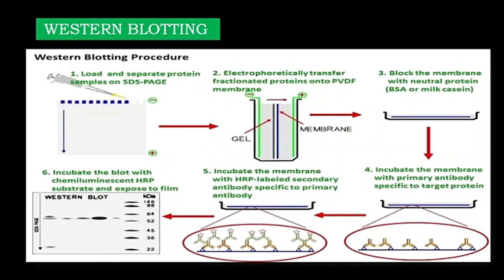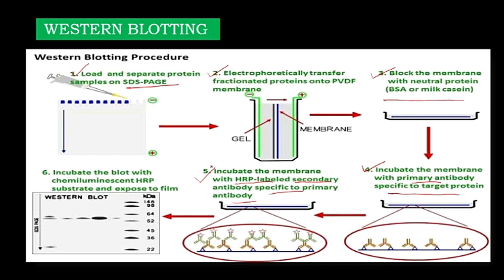Now let's move on to Western blotting. As you can see in this slide, I have divided the Western blotting procedure into six steps. First, we load and separate the proteins onto an SDS-PAGE gel. Second, we perform electrophoretic transfer of the fractionated proteins onto a PVDF membrane. Third, we block the membrane with BSA and milk casein. Fourth, we incubate the membrane with a primary antibody specific to the target. Fifth, we incubate the membrane again with an HRP-labeled secondary antibody specific to the primary antibody based on its Fc region. Sixth, we incubate the blot with a chemiluminescent HRP substrate and record the reading via autoradiography.